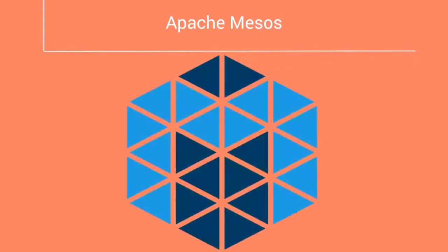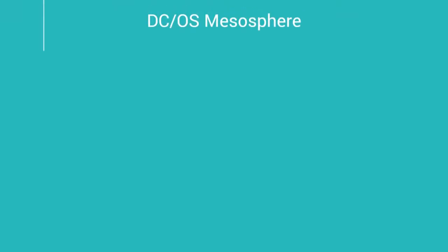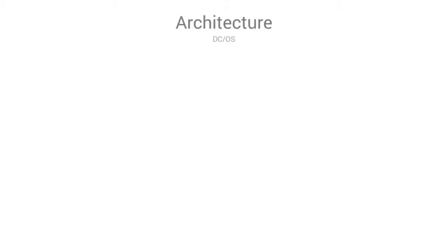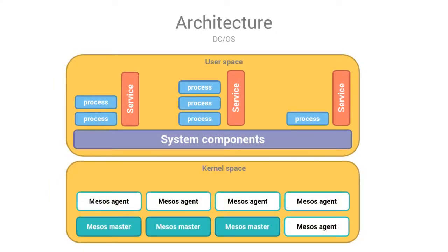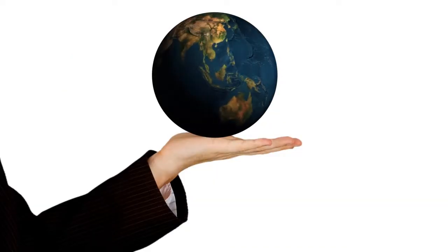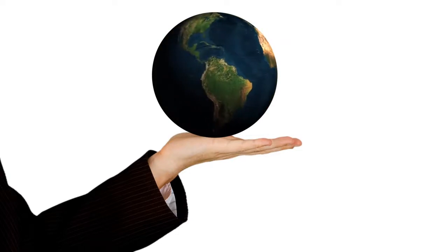Apache Mesos is an open source cluster manager that provides efficient resource isolation and sharing across distributed applications or frameworks. DCOS is an enterprise-grade, data center-scale operating system providing a single platform for running containers, big data, and distributed apps in production. DCOS is built on the Apache Mesos core and provides newer technology including native container orchestration, the Marathon application platform, an intuitive user interface, and much more. Knowledge and experience with Docker, Apache Mesos, and DCOS could be very valuable for your career.